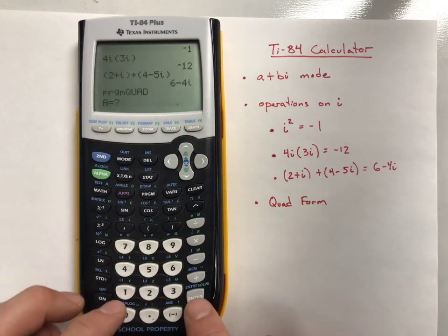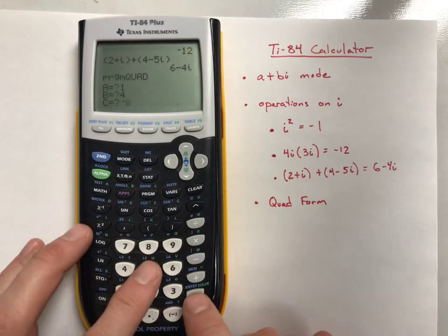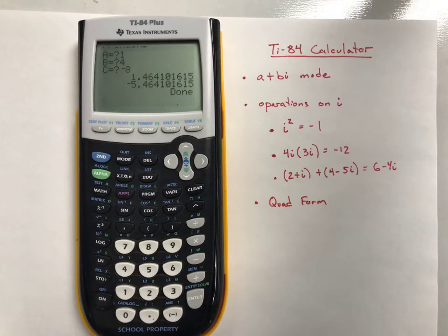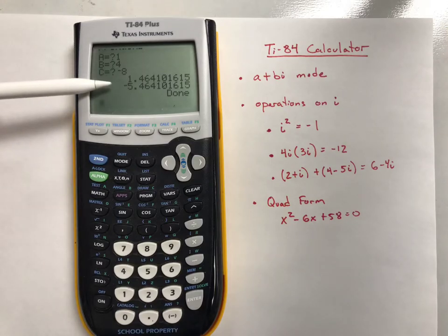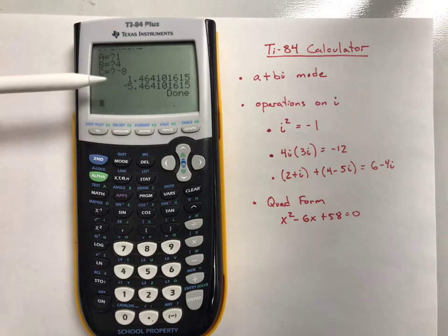So usually when you do that, if you do 1, 4, and negative 8 or something like that, it gives you your answers. Therefore, these are your roots of your quadratic equation, 1x squared plus 4x minus 8, those decimal values.